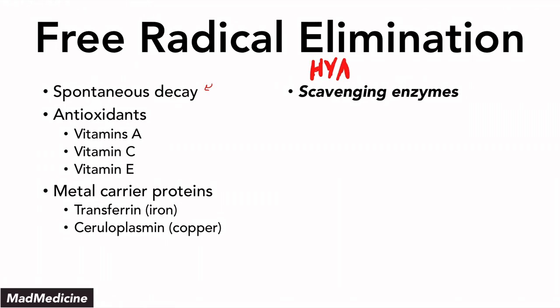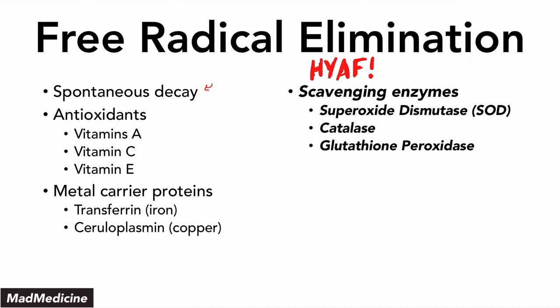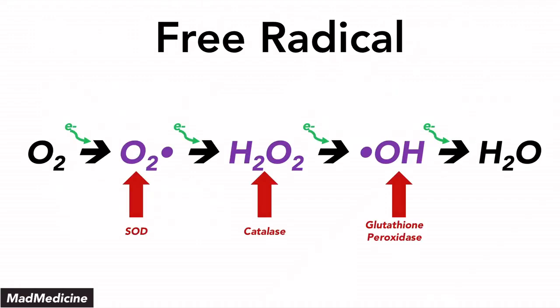The scavenging enzymes function along the oxygen reduction pathway we discussed earlier — so when oxygen is getting reduced. These enzymes include superoxide dismutase, or SOD, catalase, and glutathione peroxidase. They function at different points of that pathway. Essentially, what these scavenging enzymes do is take a free radical — for example, superoxide dismutase takes superoxide — and neutralize it by creating some other compound. By neutralizing the free radical formation, they're able to reduce the injury occurring in our body.